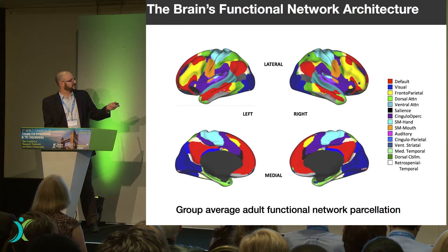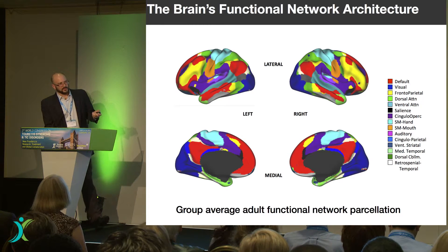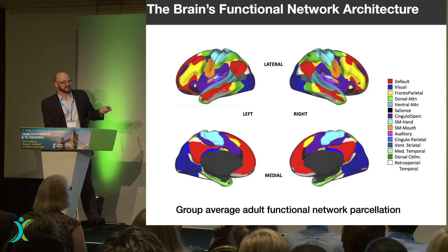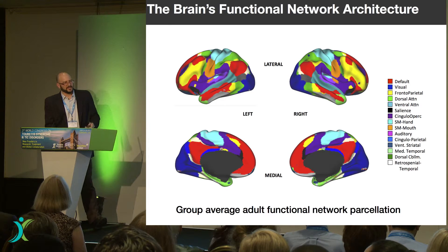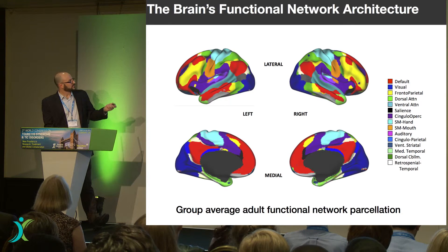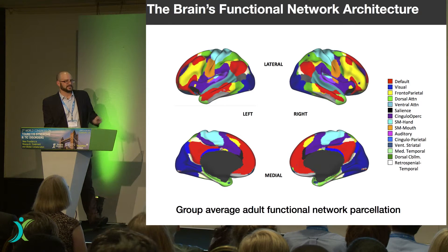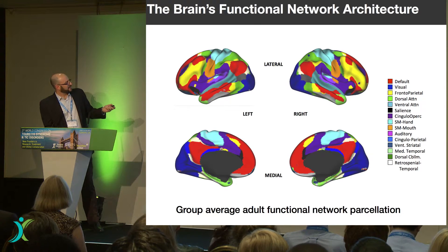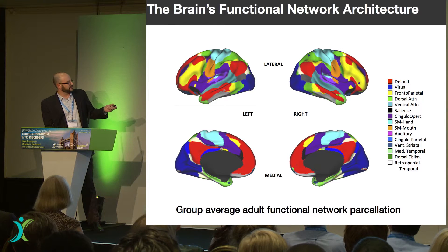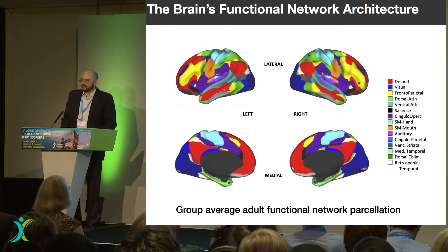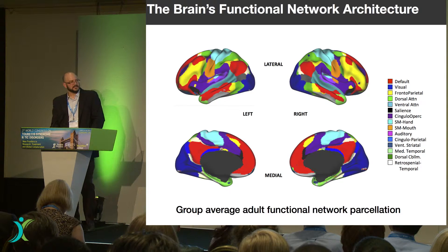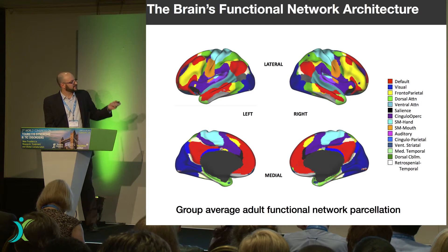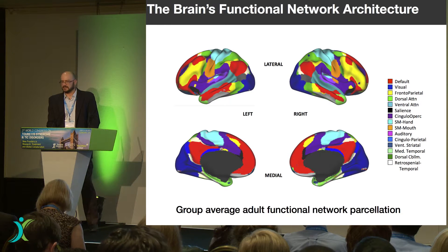We have the visual system, the auditory system. Germane to what I want to set up: we have top-down control systems like the yellow frontoparietal system involved in rapid adaptive online control, the green dorsal attention system for top-down control of visually guided attention, and the cingulo-opercular system involved in sustained maintenance of tasks. These are all systems well-defined and evident through resting state analysis.